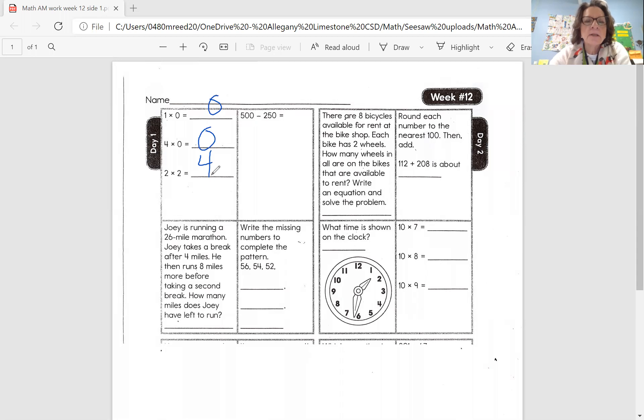Let's look at our word problem next. It says, Joey is running a 26-mile marathon. Joey takes a break after four miles. He then runs eight miles before taking a second break. How many miles does Joey have left to run? So it's a 26-mile marathon. That's the length of the entire race. He takes a break after four miles. He runs four miles, takes a break, and then he runs eight miles before he takes another break.